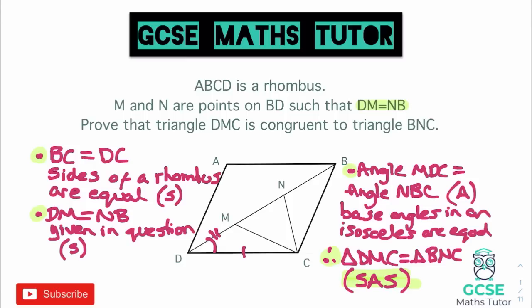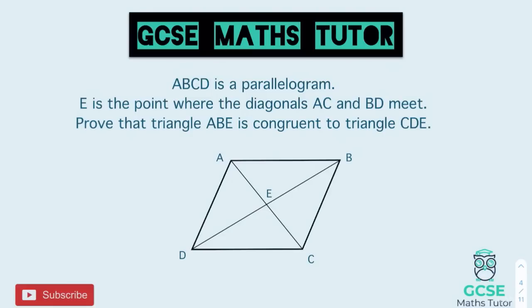Now let's look at a parallelogram question. This question says it's a parallelogram, E is the point where the diagonals meet, and we want to prove that triangle ABE is congruent to triangle CDE.